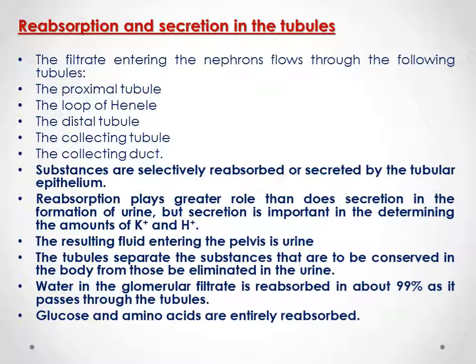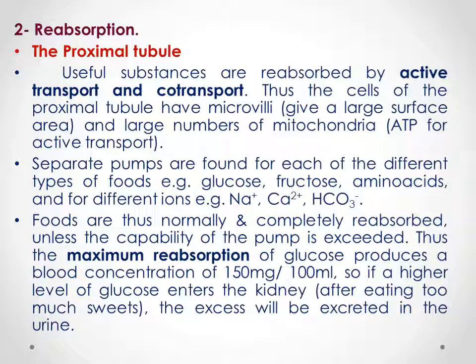Glomerular filtrate is reabsorbed in about 99% as it passes through the tubules, meaning only about 1% of the filtrate passes within the urine. Glucose and amino acids are entirely reabsorbed. Starting with the proximal tubule in detail: glucose and amino acids are reabsorbed by active transport and co-transport. The cells of the proximal tubule have microvilli and a large number of mitochondria in order to produce ATP for active transport.